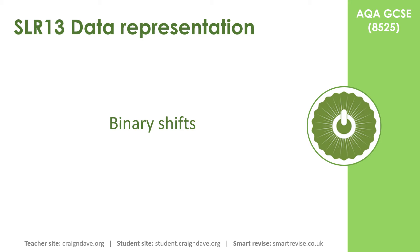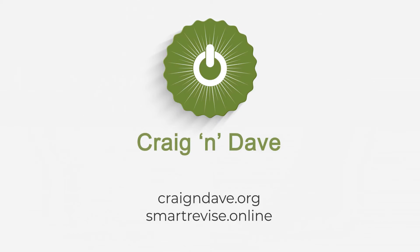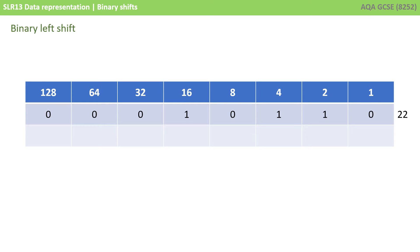In this video, we're going to be exploring binary shifts. With a binary shift, all we're going to do is shift all the bits over to the left or to the right. Let's consider the binary number 22 shown here. We're going to left-shift it by one bit.